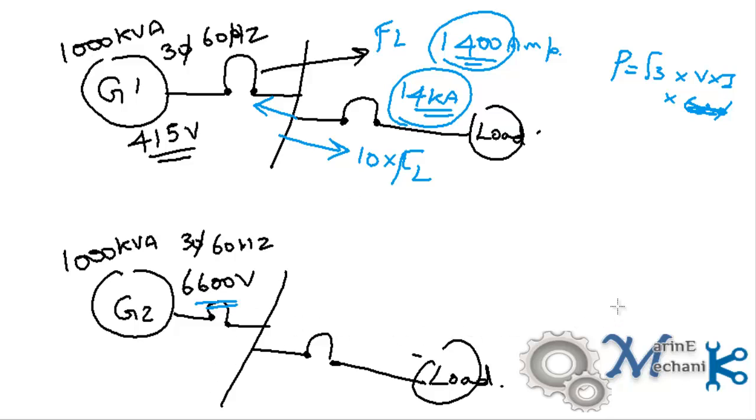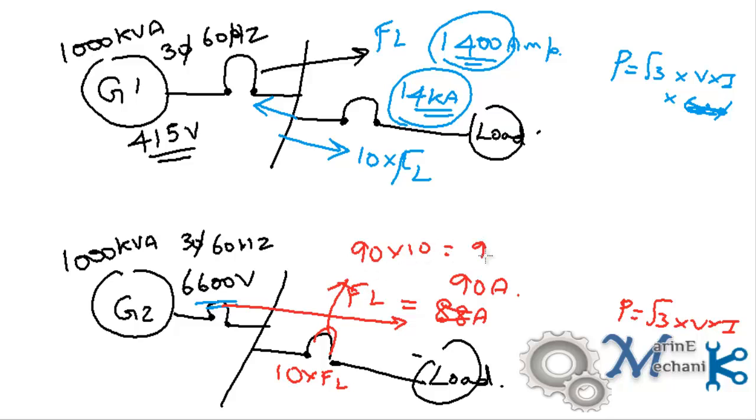Similarly, calculating with the formula root 3 V into I for the generator operating at 6600 volts, the full load current is just 88 amps, roughly 90 amps. As a thumb rule, I have to design just 10 times the full load current, so 90 into 10, that is 900 amps. This reduces the size of circuit breakers and protection devices and helps save a lot of cost and money. That's the main advantage we get by increasing the voltage. It is for this reason we operate at high voltage on board certain ships.